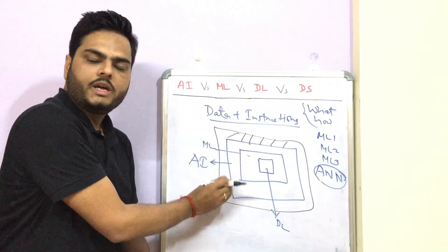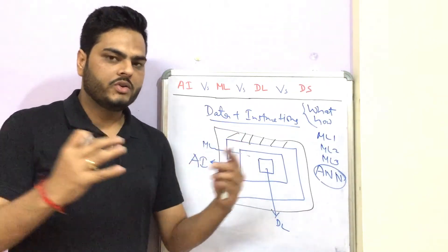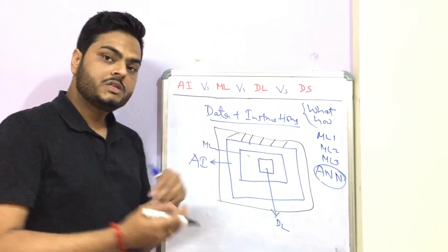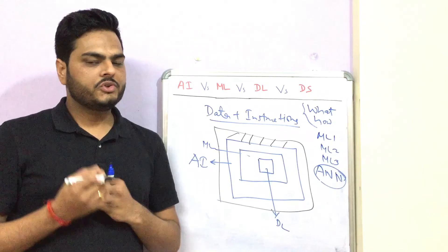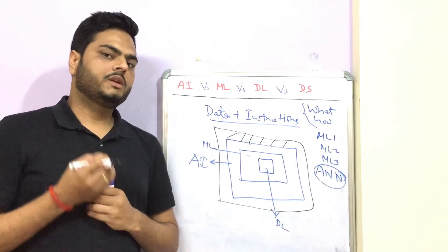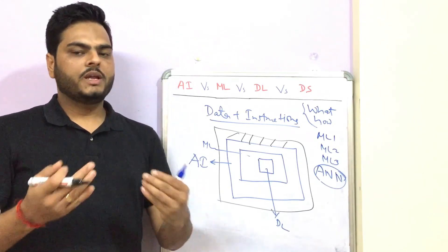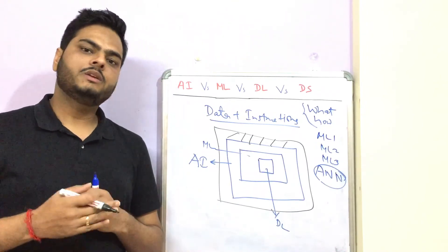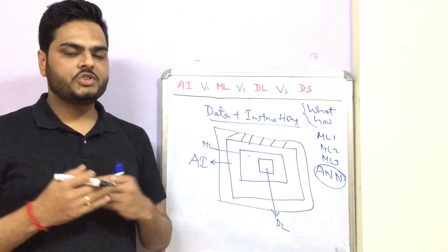So this is how data science, AI, machine learning, and deep learning are related. I am sure you would have understood by now how these terms are related. If you have any question, just go ahead and put that in the comments. How did you like this video? Let me know through likes and comments. I will see you all in the next video with another interesting topic. Till then, take care.